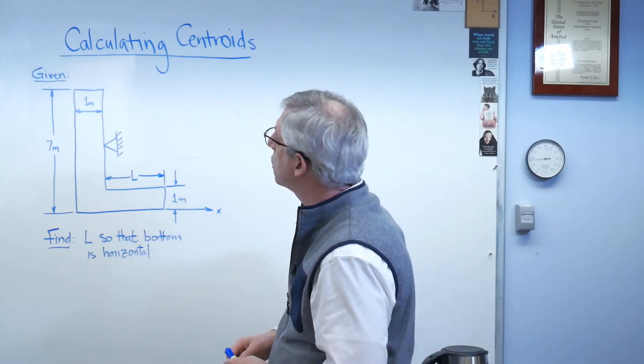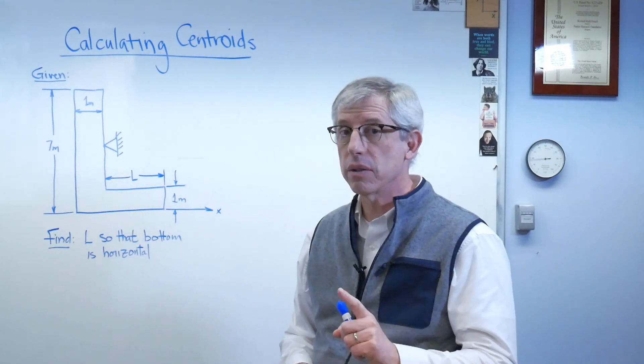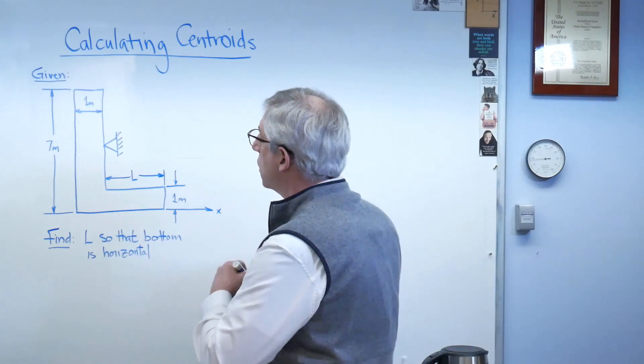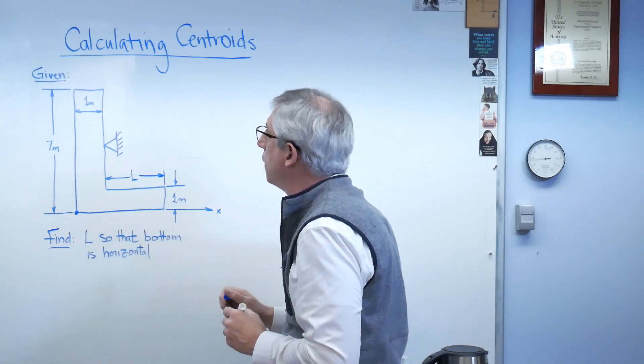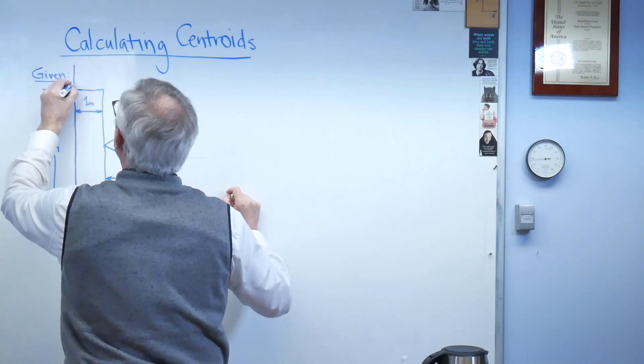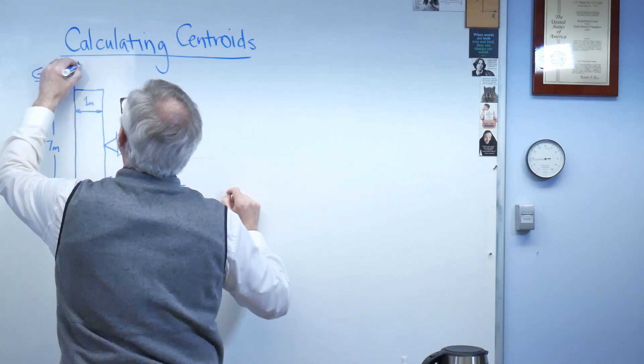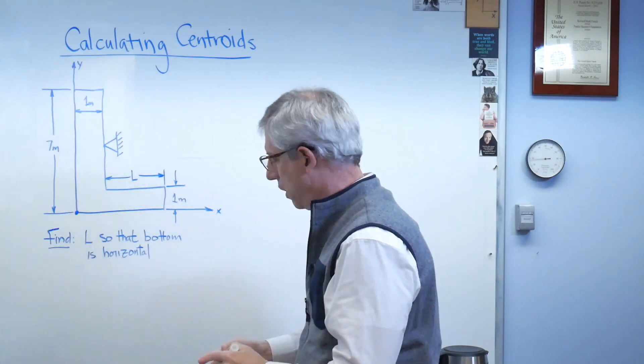So let's start here. Let's start with the equation that describes the location of the x-centroid only. Now I'm going to need an origin, so I'm going to use that dot right there as the origin. And you can see I've got my x-axis there, and I meant to put that there. So there's y.